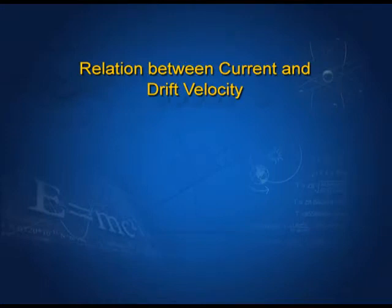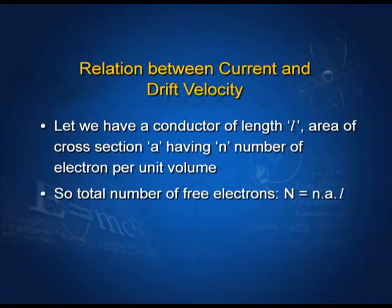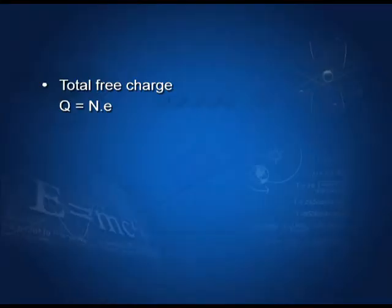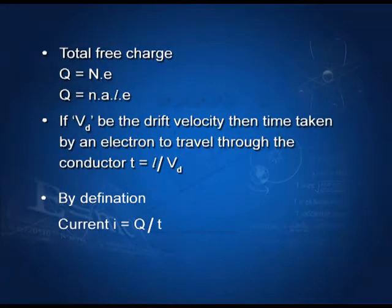Relation between current and drift velocity: consider a conductor of length L and area of cross-section A, having n free electrons per unit volume. The total number of free electrons N equals n·A·L. The total free charge q equals N·e, so q equals n·A·L·e. If vd is the drift velocity, then time taken by an electron to travel through the conductor is t equals L upon vd. By definition, current i equals q upon t, so substituting values, we get i equals nAevd.